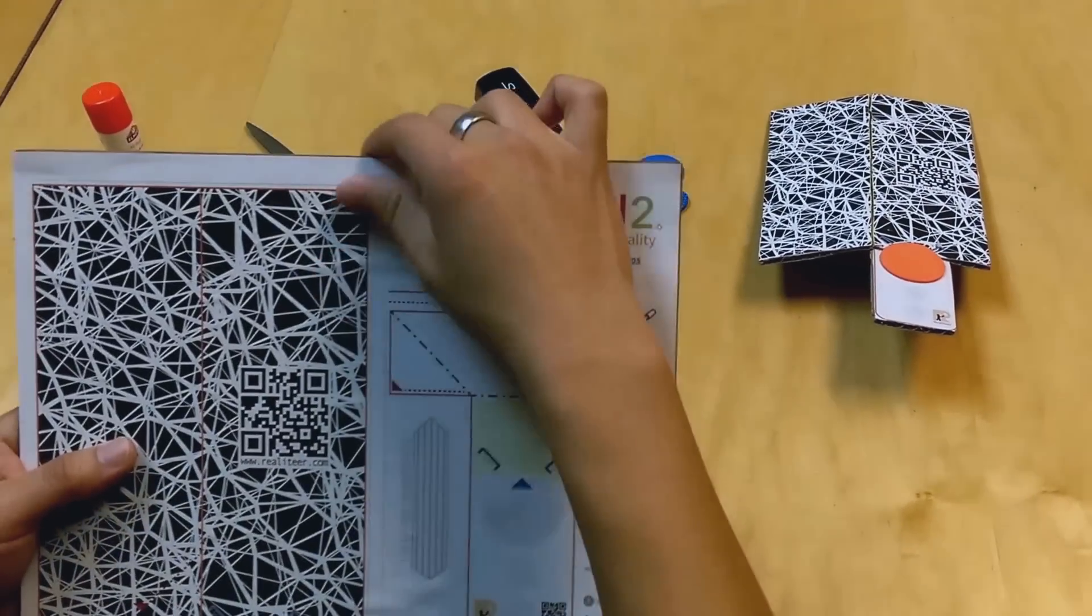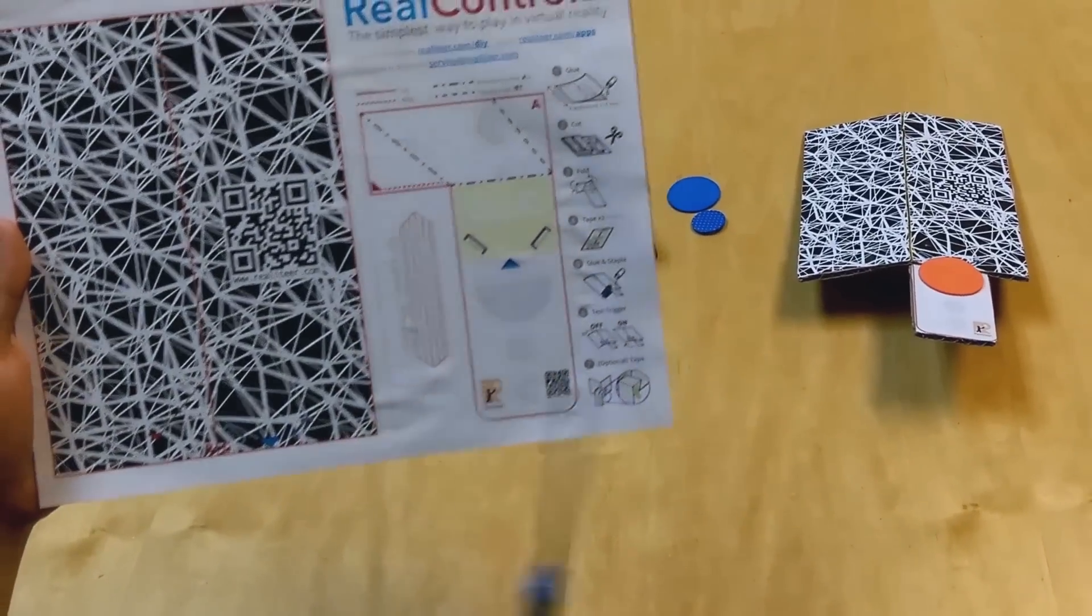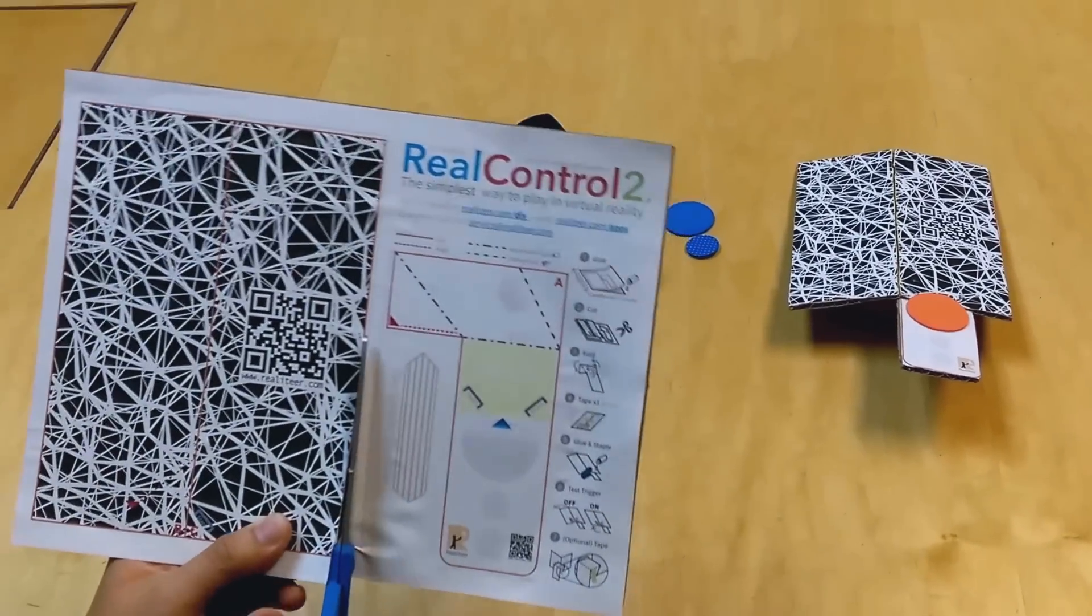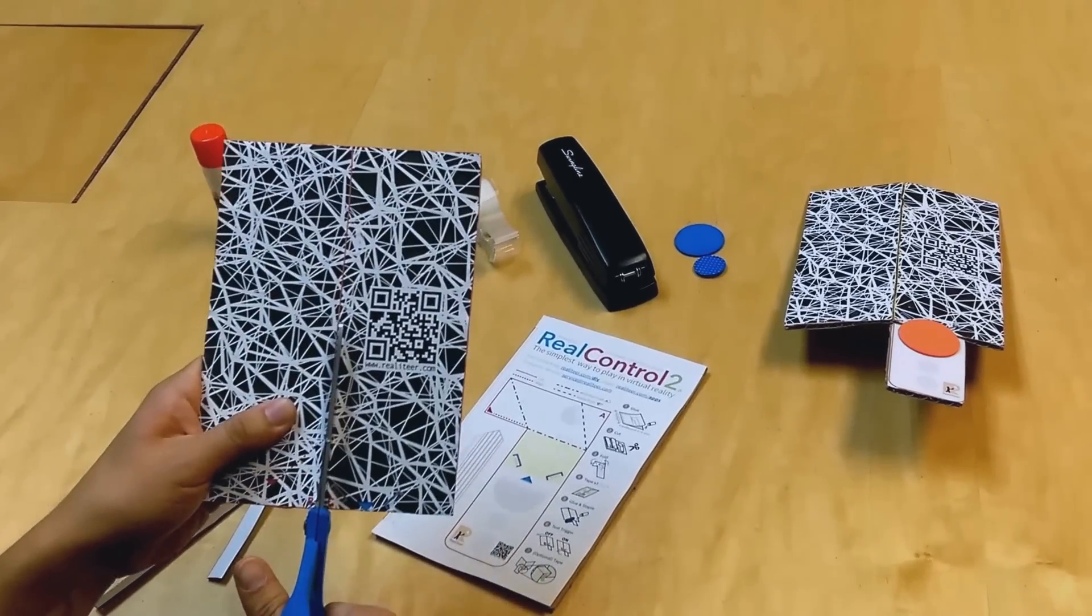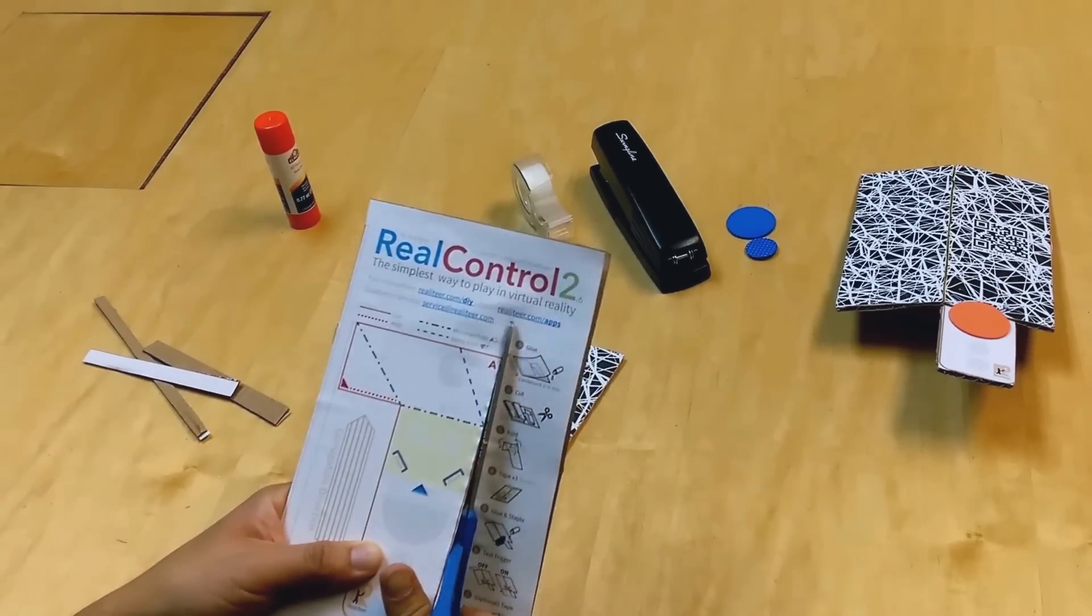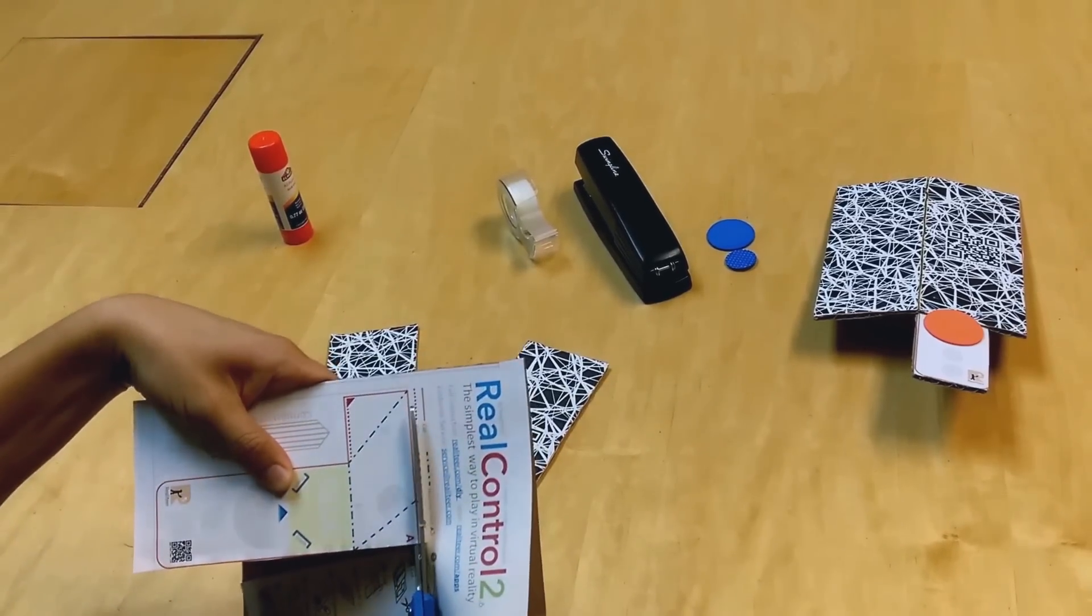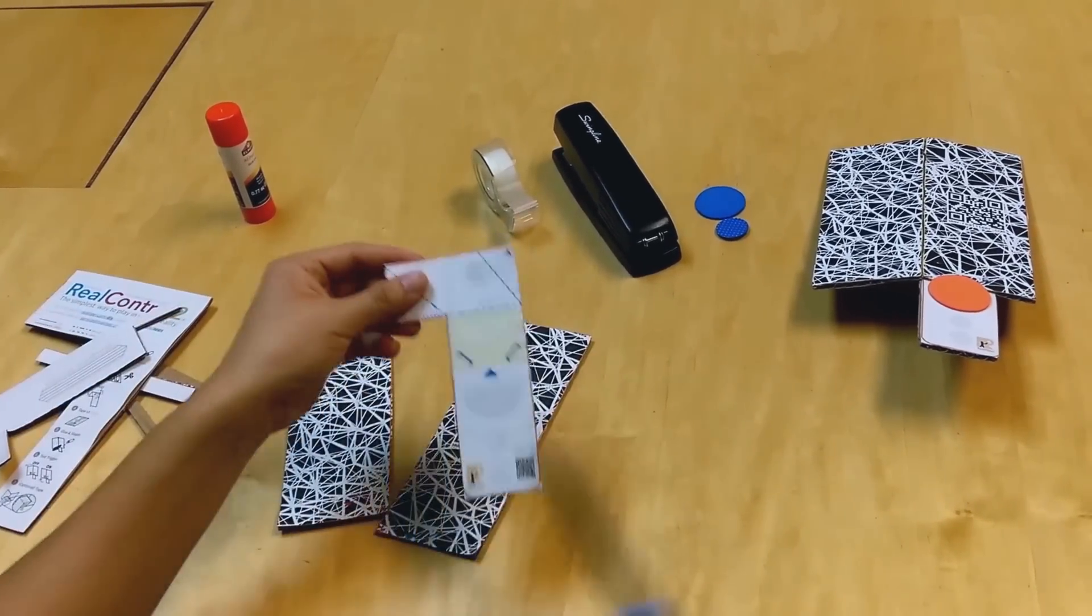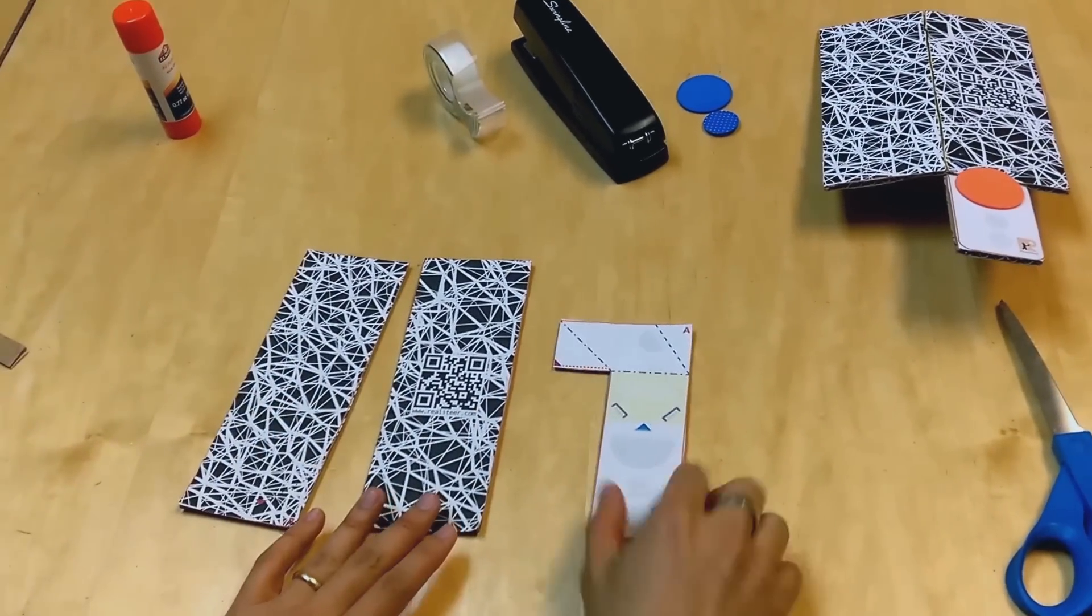Step 2. You want to cut the orange lines. So you'll get two panels and one handle.